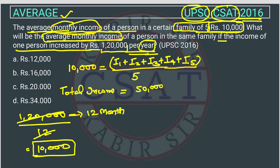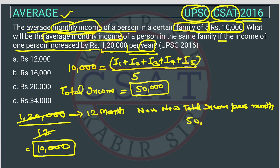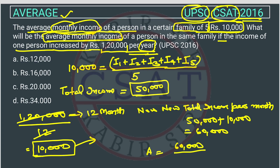So now what will be the total income? The new total income will be 50,000 plus 10,000. Previously the total was 50,000, plus the increment per month is 10,000, so the new total is 60,000. The question is asking for the new average, so we divide 60,000 by the number of persons, which is still 5. This comes out to 12,000.